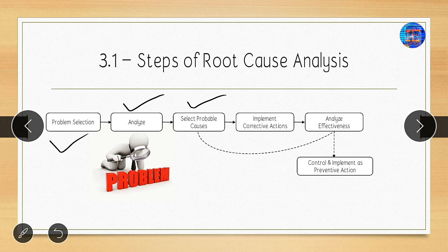After selecting the probable cause, we implement a corrective action. Then we analyze the effectiveness. If it is effective, we control it and implement it as a preventive action. If it is not effective, we go back and select another probable cause, implement another corrective action, and analyze the effectiveness again. This is the basic method of root cause analysis.